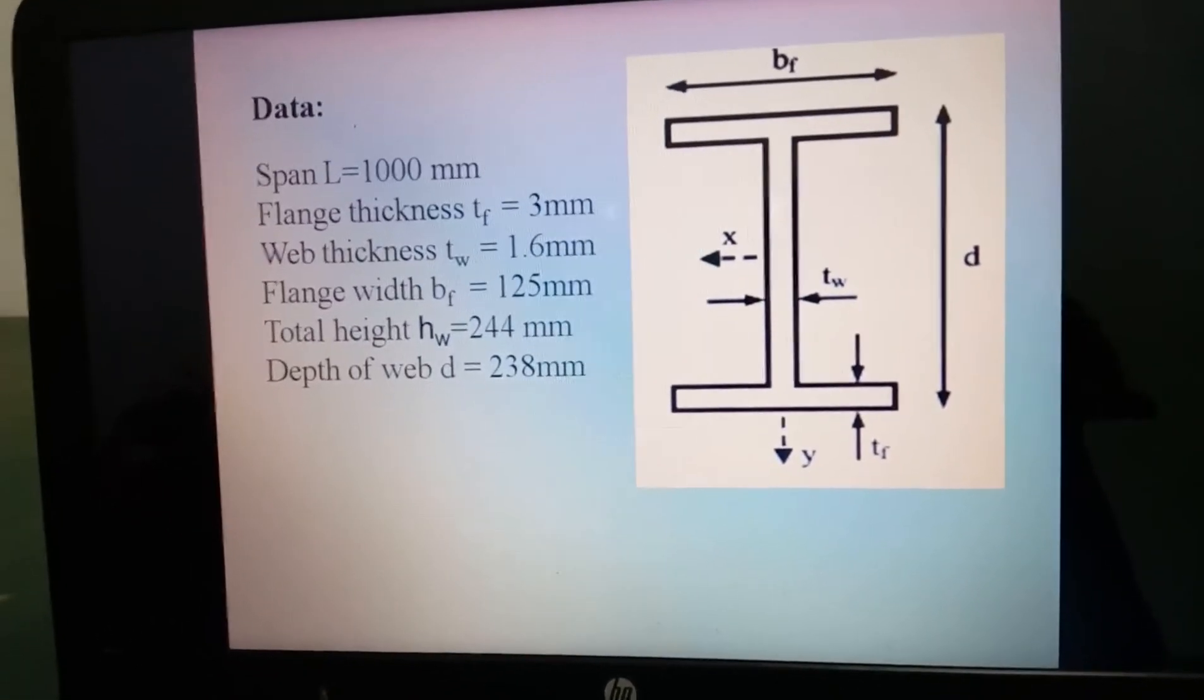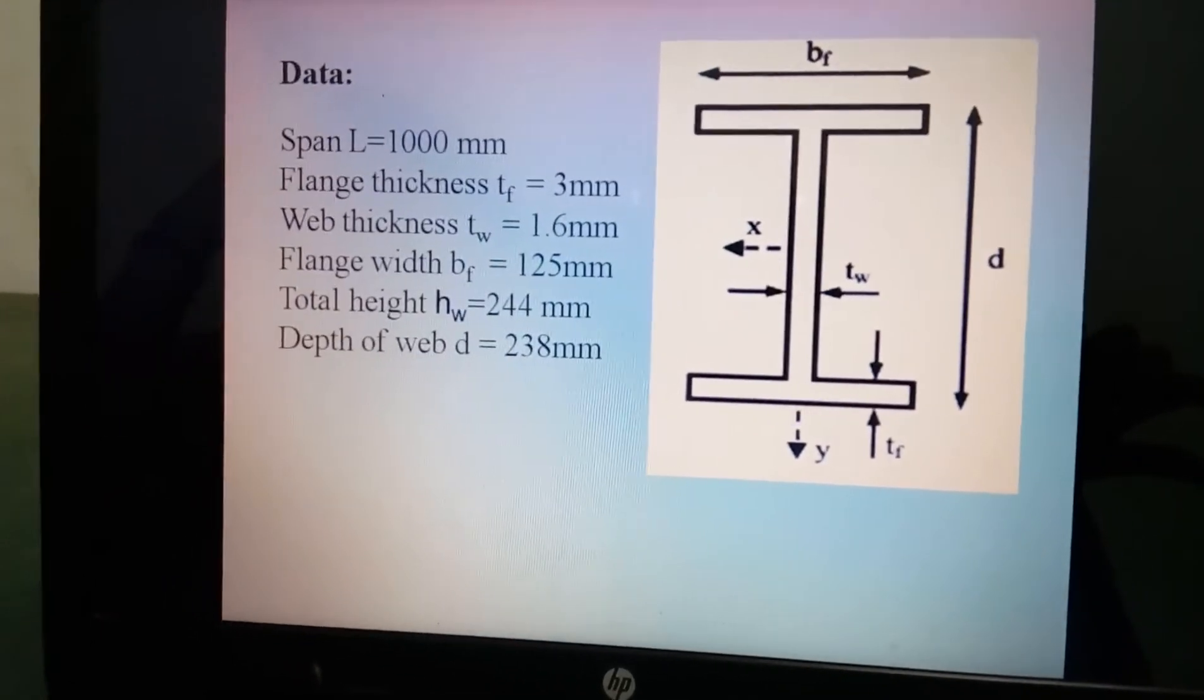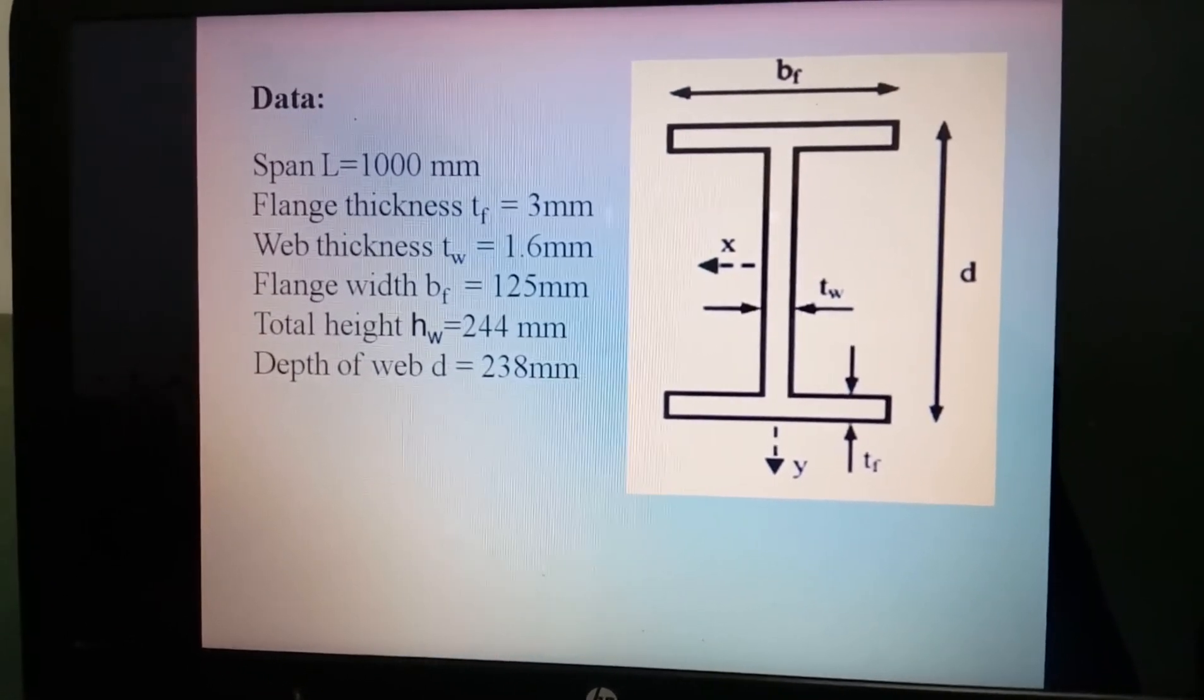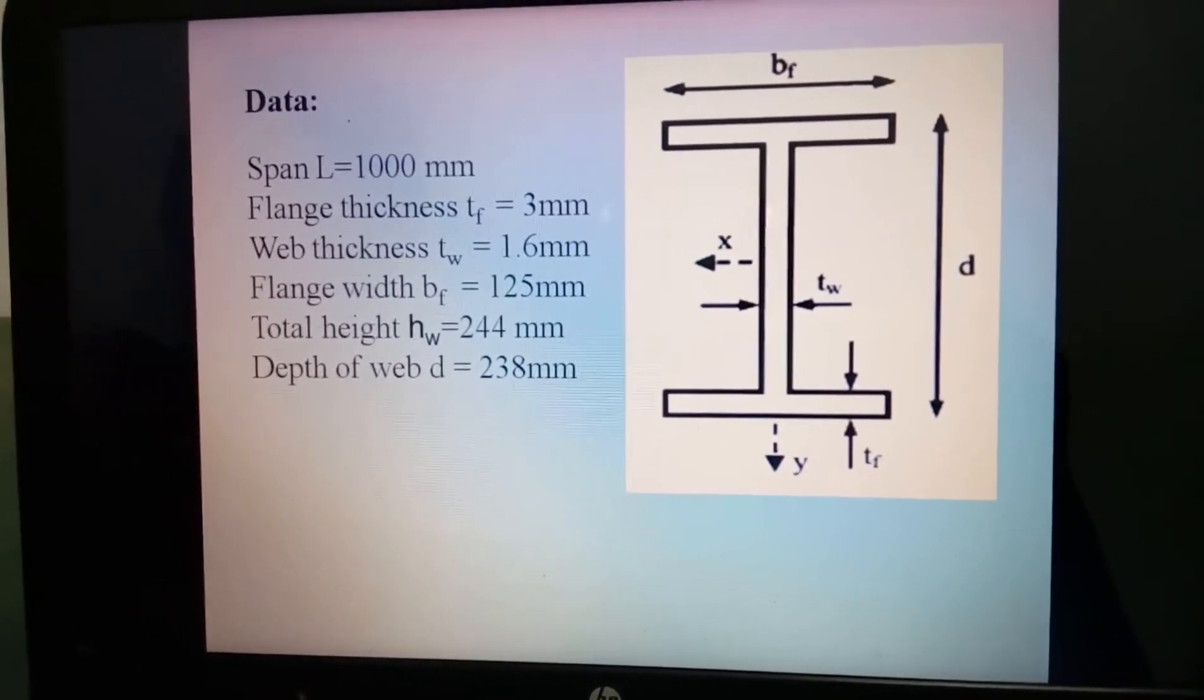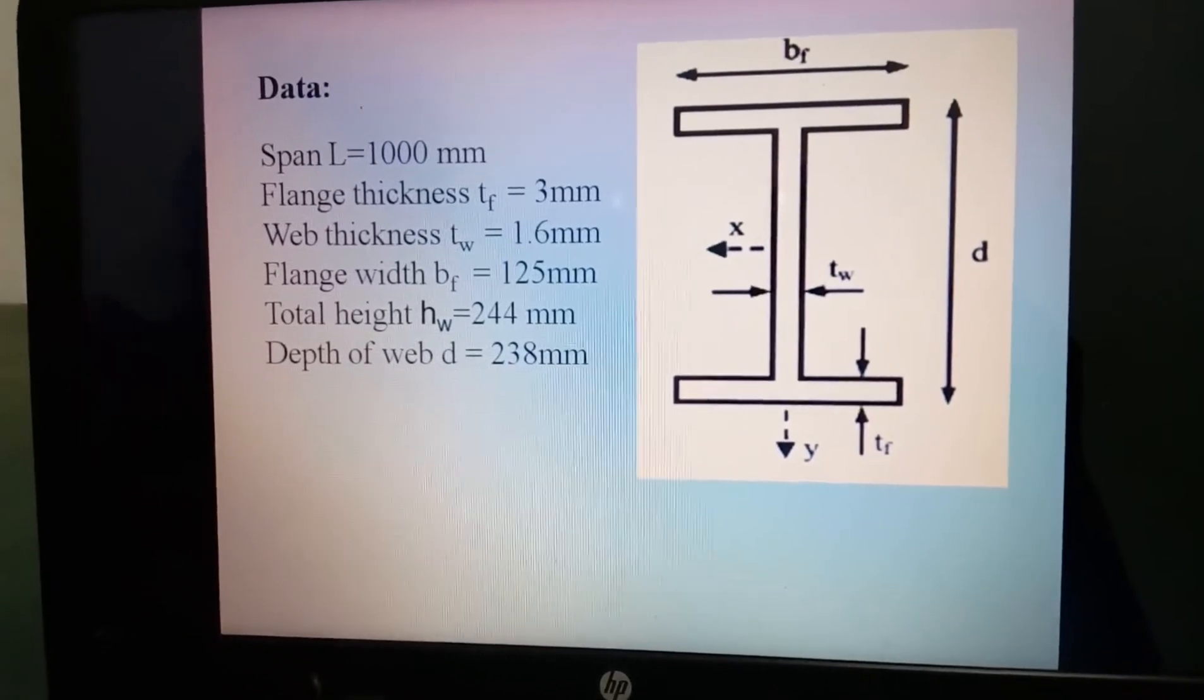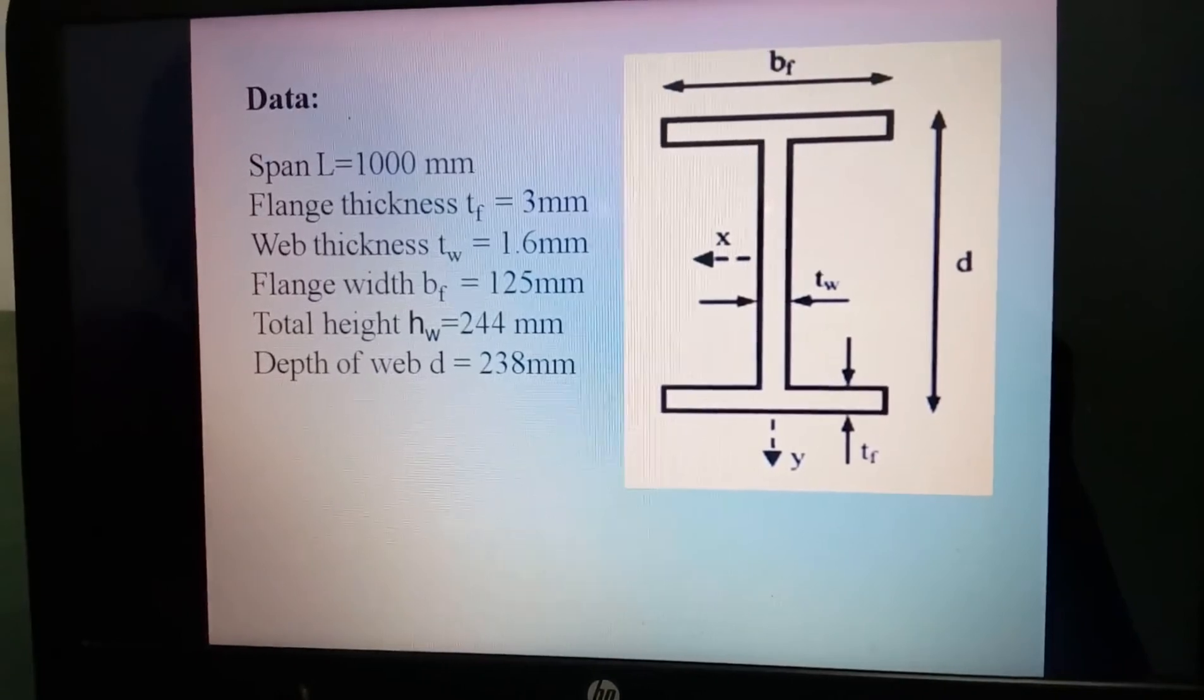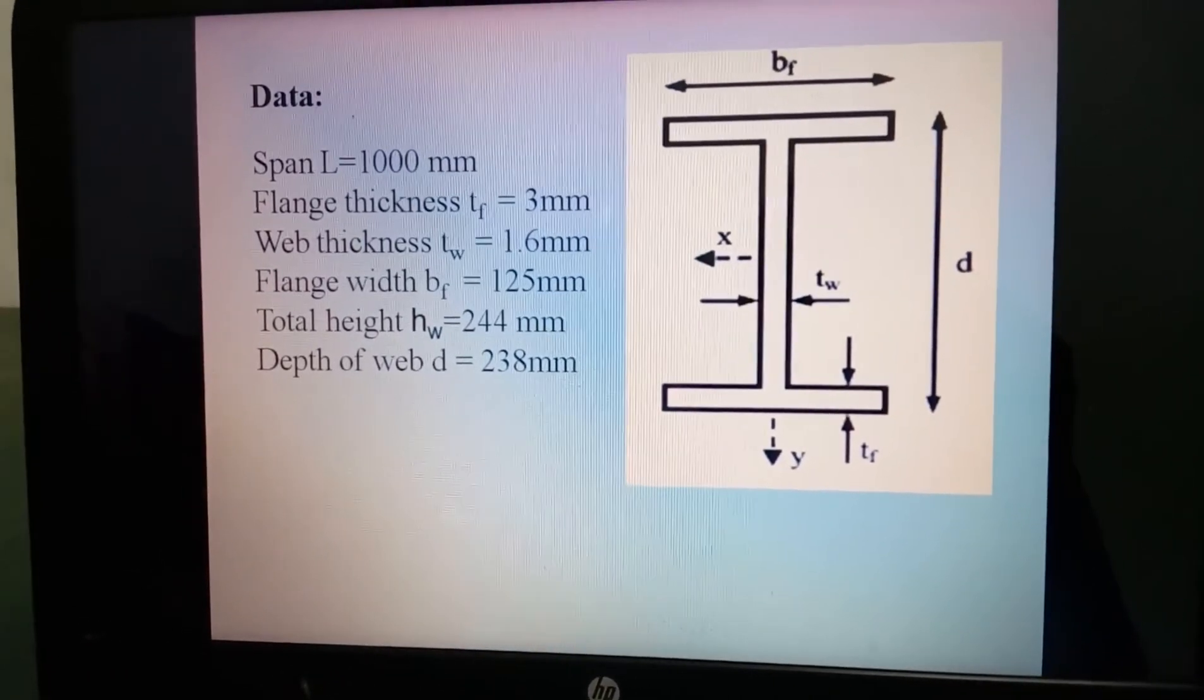Data which I assumed: length is 1000 mm, flange thickness TF is 3 mm, web thickness TW is 1.6 mm, flange width is 125 mm, total height HW is 244 mm, depth of web is 238 mm.